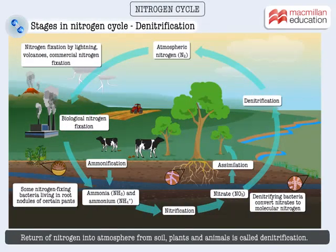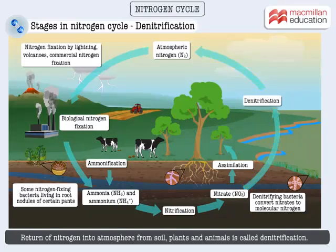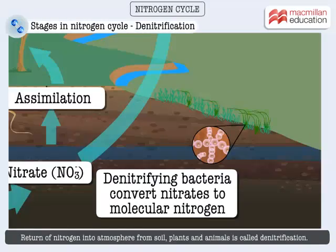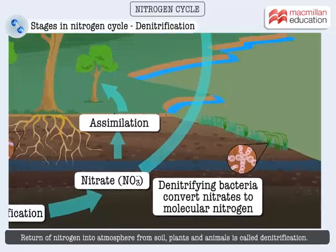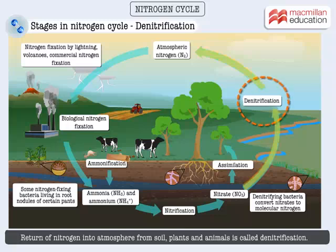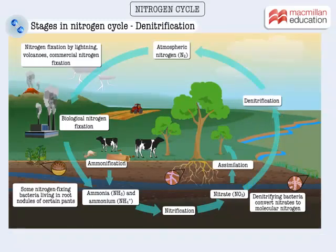Nitrogen compounds in the soil and dead matter are acted upon by certain bacteria to release free nitrogen back into the atmosphere. These bacteria are referred to as denitrifying bacteria, and this process is called denitrification. Thus, atmospheric nitrogen gets recycled in nature.